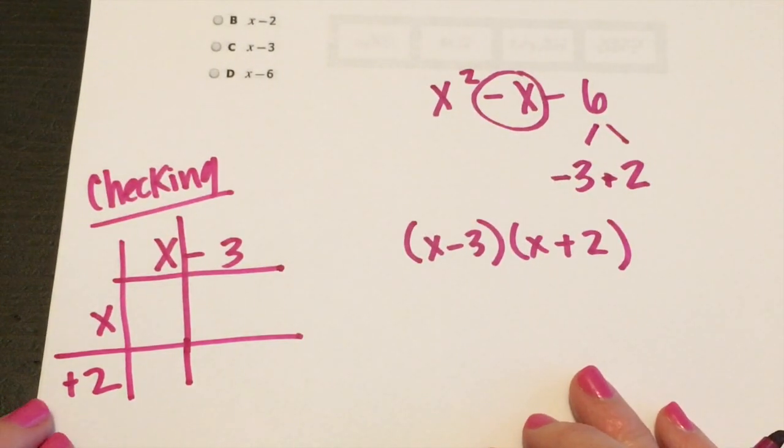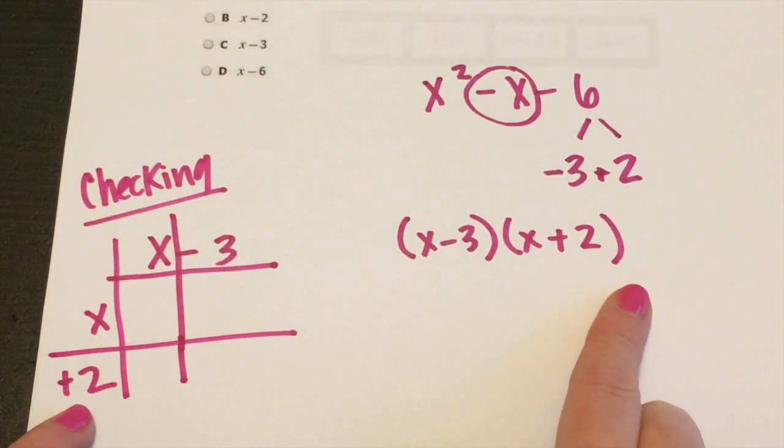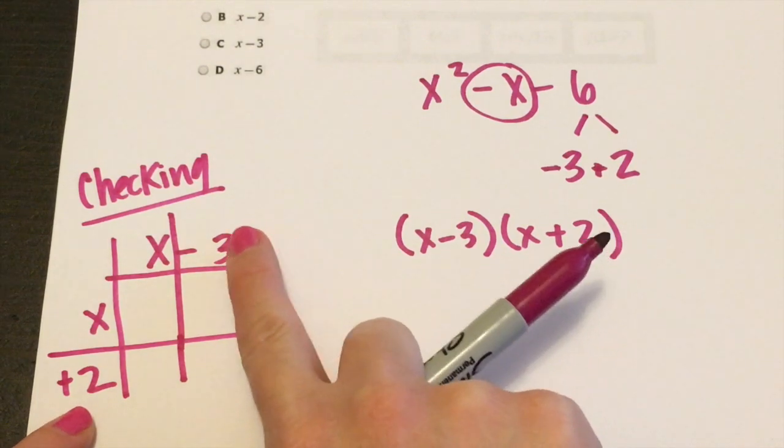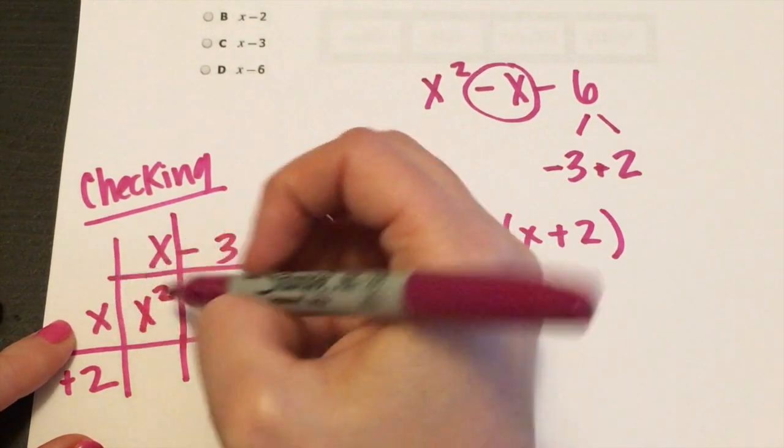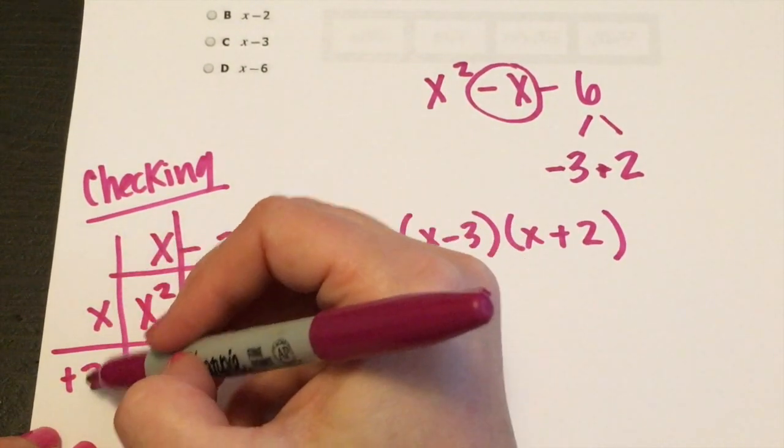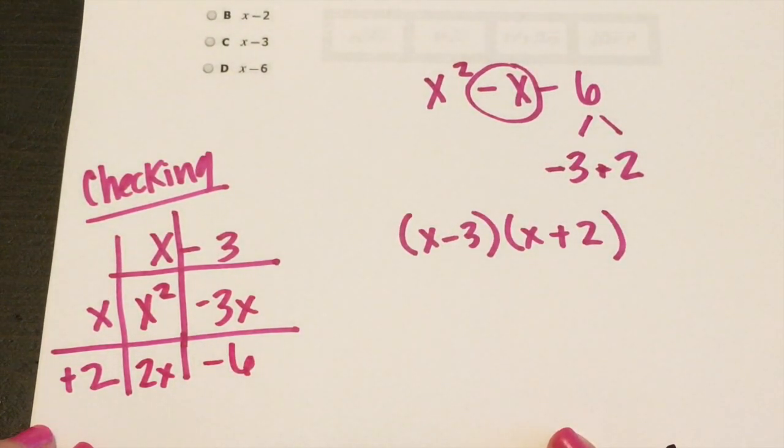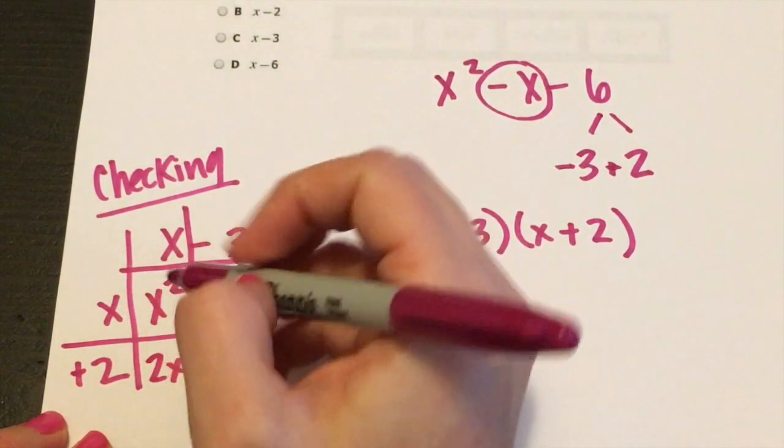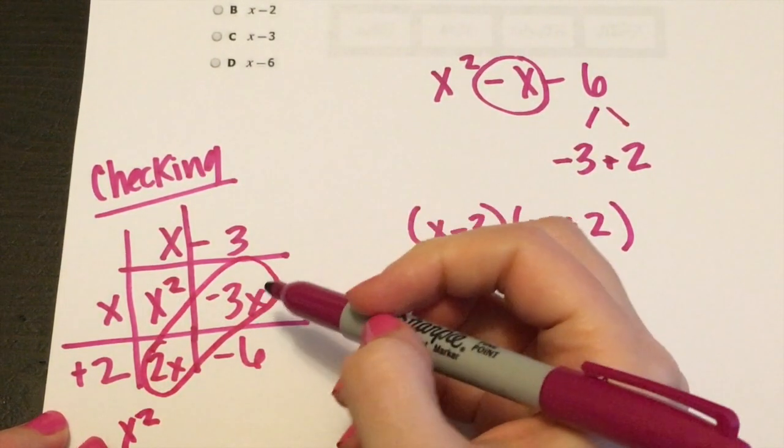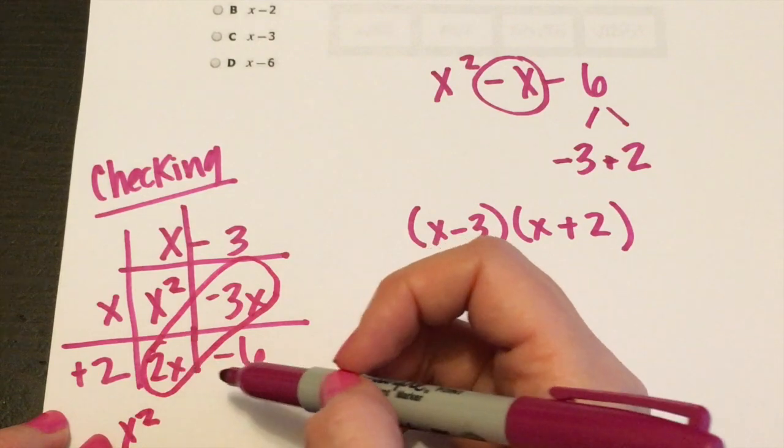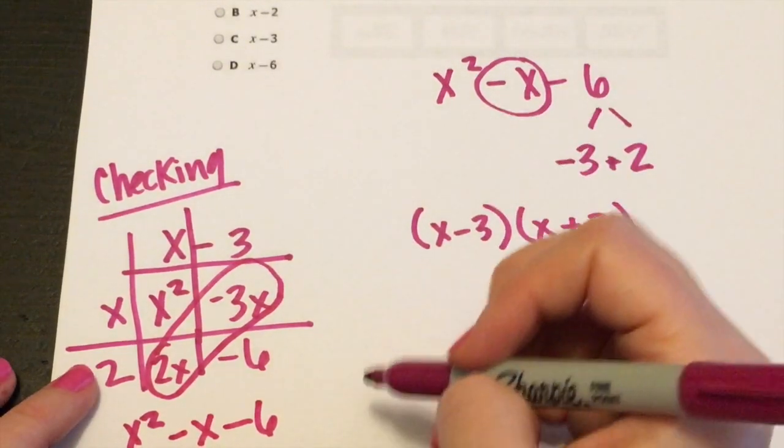And I write x minus three. So here I'm checking and then x plus two. This is called the box method. Here's my first factor, x minus three, and then x plus two. Notice they put the plus two down here and the minus three up here. We're going to multiply x squared. So a negative three times x is a negative three x. Two times x is two x. And two times three is negative six. From here, you're going to add what's in the box. We're going to bring it straight down. We're going to add these together. So a negative three x plus two x is a negative x minus six. These are the same. So our answer checks.